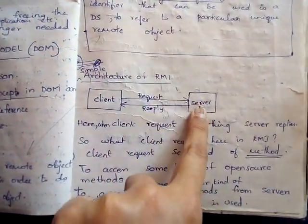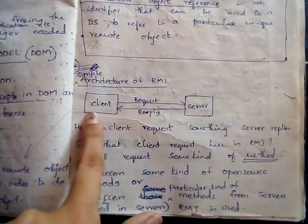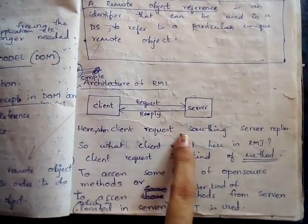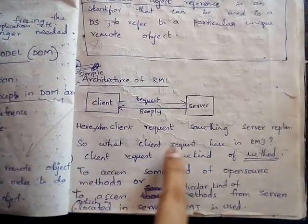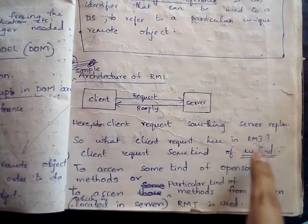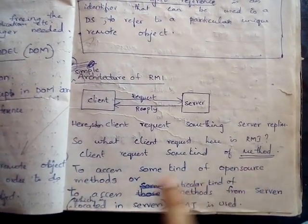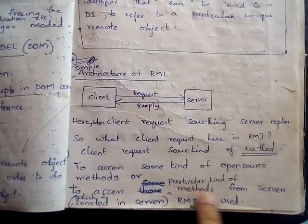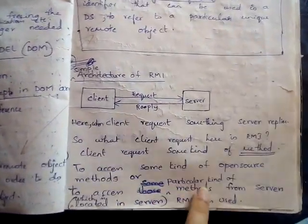Here is a simple architecture of RMI: a client sends a request to a server, the server processes it and sends back a reply to the client. What does the client request in RMI? The client requests access to particular methods located on the server — that is what remote method invocation is used for.